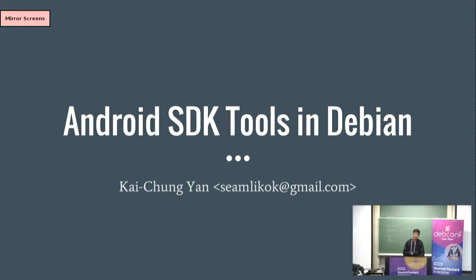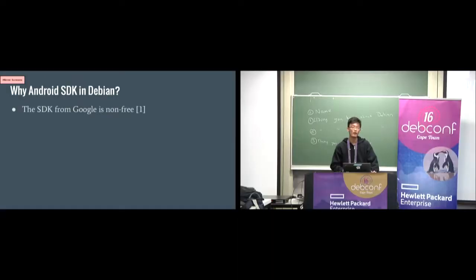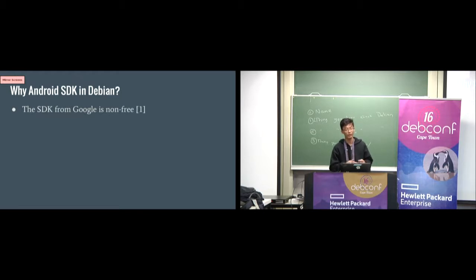So why are we doing this? The first reason is the SDK from Google is not free software. The SDK bundle downloaded from the website is not free software — it's not Apache 2.0, it's proprietary. If you use that you'll have some limitations. For example, you can't load any SDK component onto a mobile device, or you can't even use the SDK to develop applications for platforms other than Android.